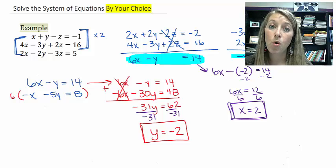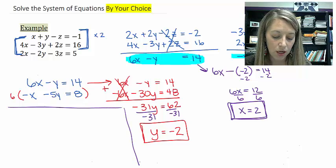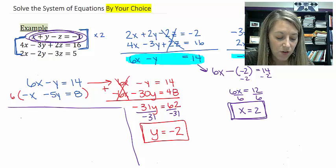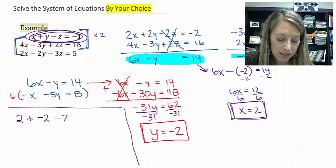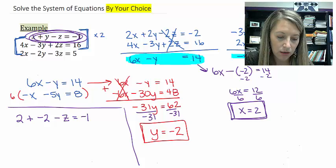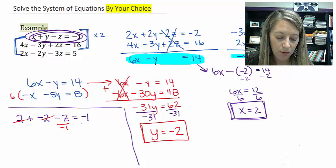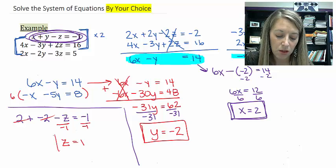Now, I can take both of these and plug them back into the original equations to figure out the third variable. So let me do that over here. I'm going to plug it back into the first one. That one looks the easiest. So my x variable is 2, plus my y variable is negative 2, minus z is equal to negative 1. I see that my 2 and negative 2 actually cancel out. So when I go to solve for this negative z, I just divide by a negative 1. And I see that z is equal to 1. So that's my third answer.